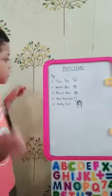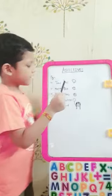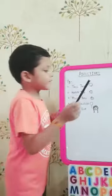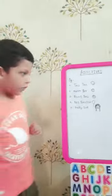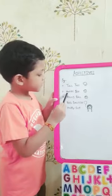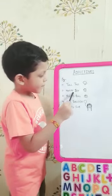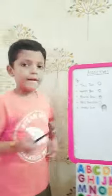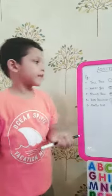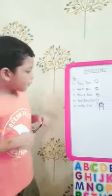The first example is tall tree. Tall is an adjective and tree is a noun. The second example is happy boy. Happy is an adjective and boy is a noun.